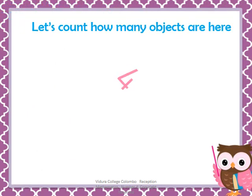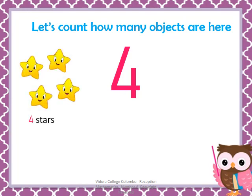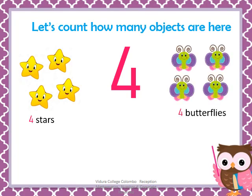Let's count how many objects are here. 1, 2, 3, 4. There are 4 stars. Now shall we count the butterflies? 1, 2, 3, 4. There are 4 butterflies.